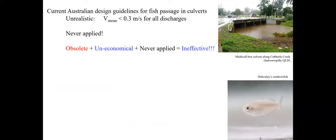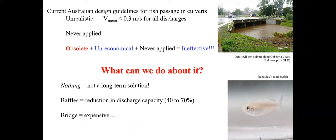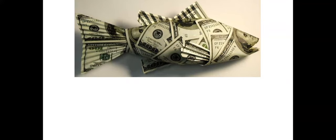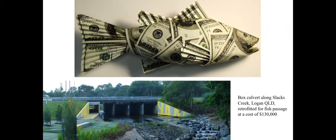Current guidelines are unrealistic — they assume the bulk velocity of a road crossing must be less than 0.3 meters per second, and in practice are never applied. We could use baffles, which often lead to a drastic reduction in discharge capacity and an increase in cost. Or we could build a bridge, which is even more expensive. For example, one structure was retrofitted for $130,000 to improve fish passage to some extent, but it reduced the discharge capacity.